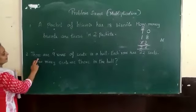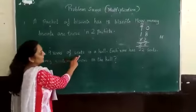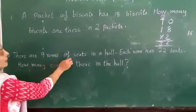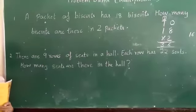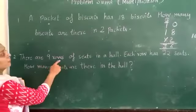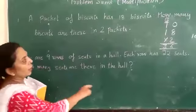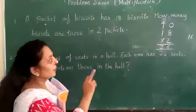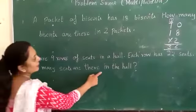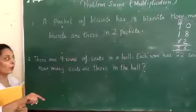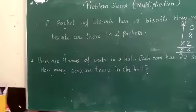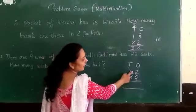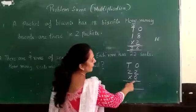The next sum: there are 9 rows of seeds in a hole. Each row has 22 seeds. How many seeds are there in the whole hole? We will use the 9 times table. We have 22 multiplied by 9.